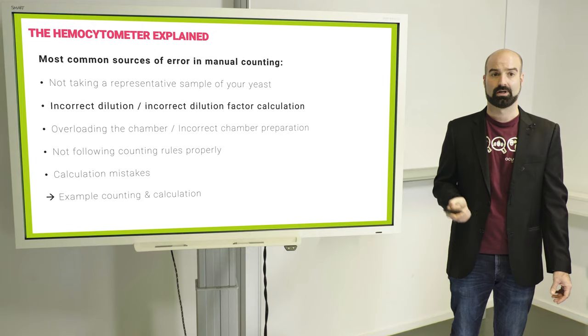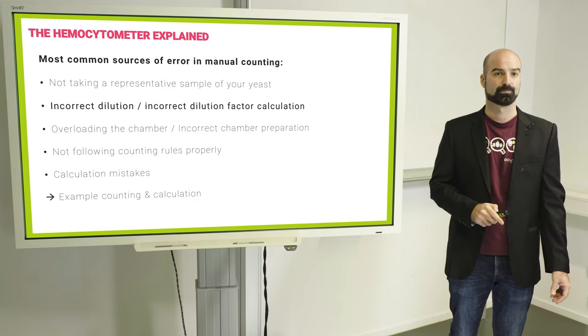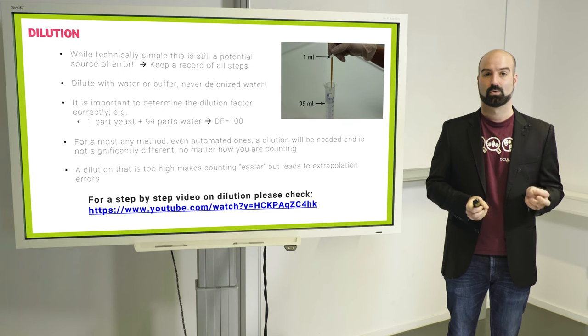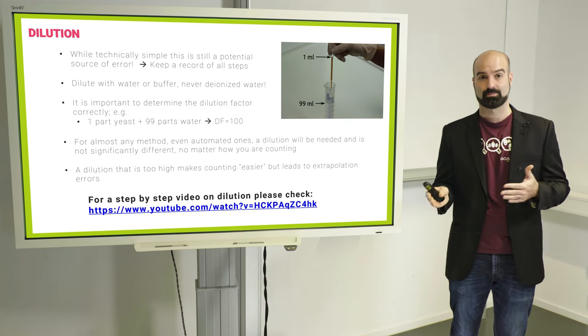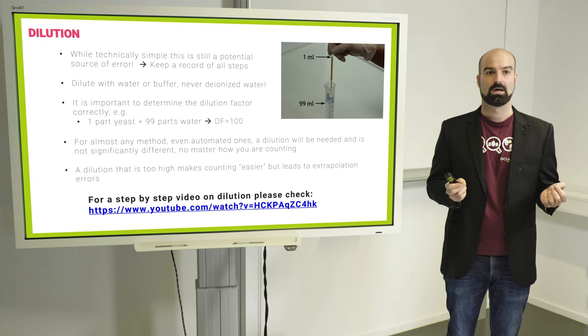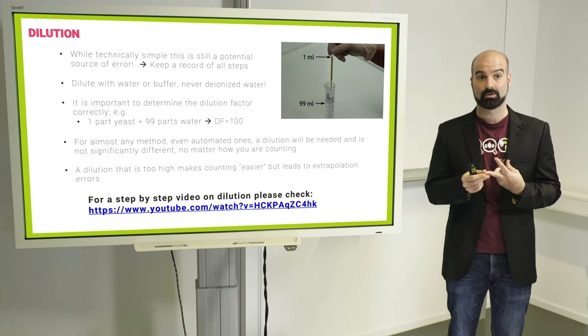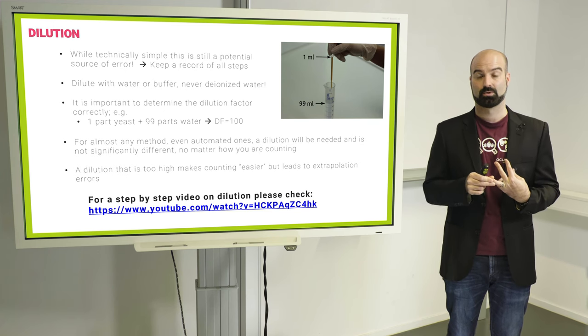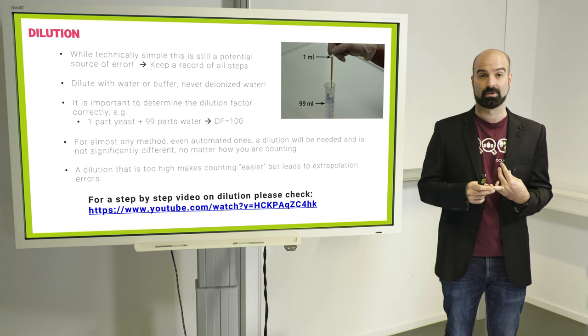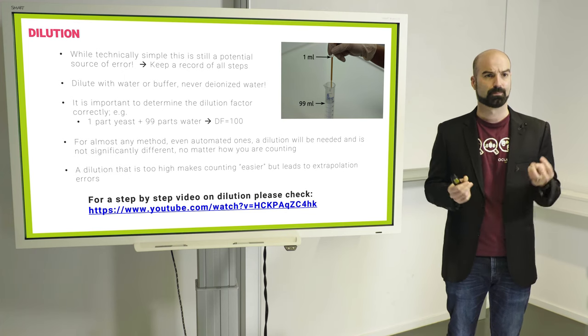The second error is actually one of the most common ones, which is incorrect dilution or calculating the dilution factor incorrectly. Dilution itself is technically very simple. You just take your sample and dilute it in water. But errors can and do happen here. You should watch out and write down all of your steps so you can trace your errors afterwards. Also, you should be diluting with buffer or with water, like regular tap water, not with deionized water. Deionized water puts osmotic stress on the cells and can affect the viability measurement quite a bit. Sadly, we see this quite often. The dilution factor is also fairly simple to calculate. We'll go into the formula later, but errors do happen here as well. So watch out.